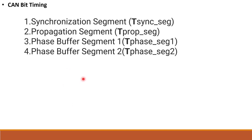We will represent these four types. First one is synchronization segment, second one is propagation segment, then phase segment 1 and phase buffer segment 2. Normally each and every segment has its own specification and functionality.